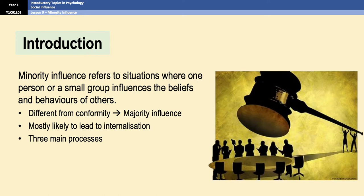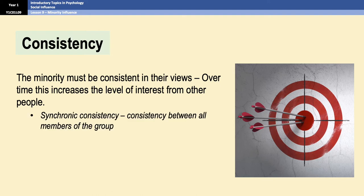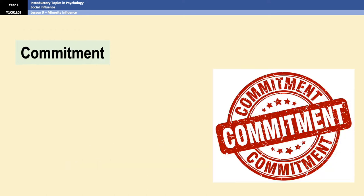Those processes are consistency, commitment, and flexibility. Consistency means that minorities have to stick to their beliefs, because nobody's going to take them seriously if they're constantly changing their minds. They have to be consistent over time, which is known as diachronic consistency, and they have to maintain consistency within the group, which is known as synchronic consistency. You can't have one member of the group saying something different to the others, because it'll give the impression that you don't know what you want, and people won't take you very seriously.